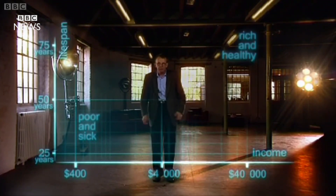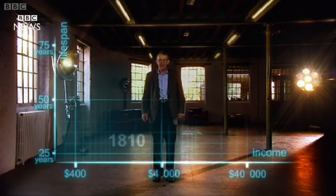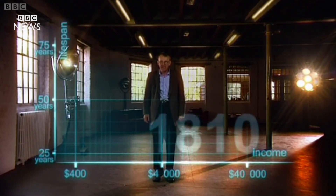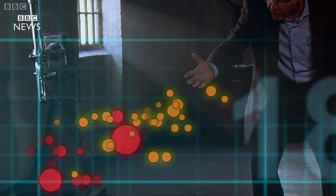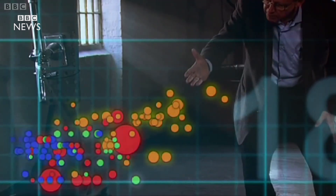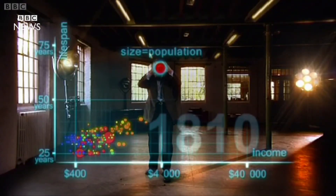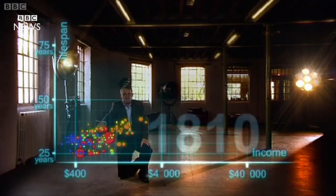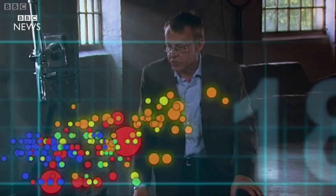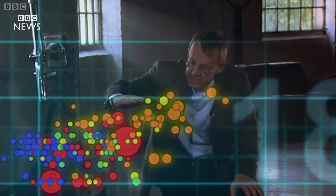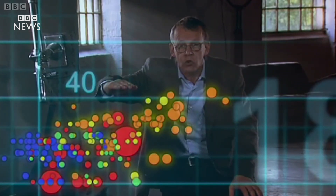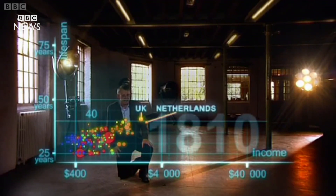Now I'm going to show you the world 200 years ago in 1810. Here come all the countries: Europe brown, Asia red, Middle East green, Africa south of Sahara blue, and the Americas yellow. The size of the country bubble shows the size of the population. And in 1810 it was pretty crowded down there — all countries were sick and poor. Life expectancy was below 40 in all countries, and only the UK and the Netherlands were slightly better off, but not much.